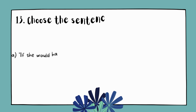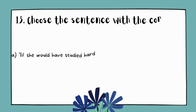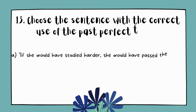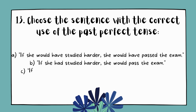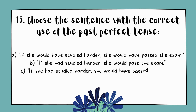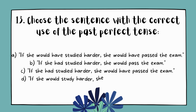Question 13. Choose the sentence with the correct use of the past perfect tense. A. If she would have studied harder, she would have passed the exam. B. If she had studied harder, she would pass the exam. C. If she had studied harder, she would have passed the exam. D. If she would study harder, she would have passed the exam.